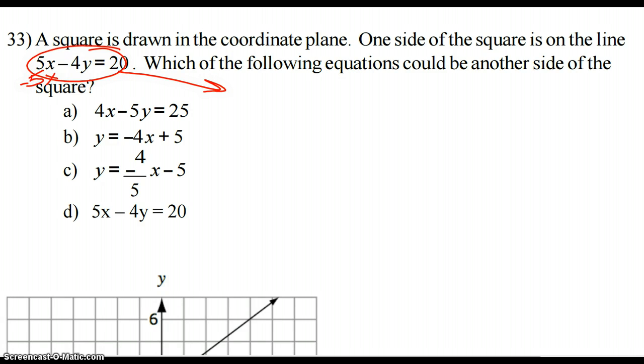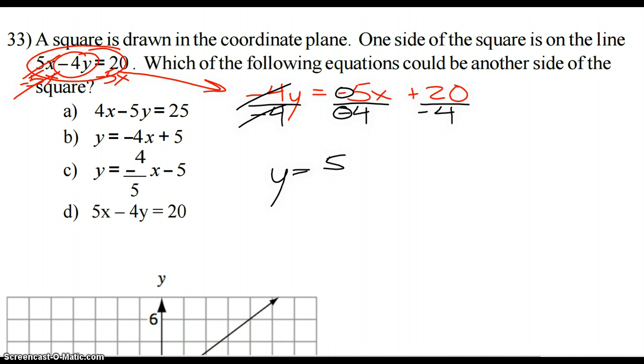So the first thing is I'd subtract 5x on both sides. We're going to get this into slope intercept form. All right, so we're left with negative 4y equals, and I'm going to put negative 5x plus 20. You could have put 20 minus 5x, but I like to put the slope first. And then we divide everything by negative 4. And we've got y equals, so we've got a negative over a negative, and I'm going to leave this as 5 fourths x. Negative over a negative is positive. And then 20 divided by negative 4 would be plus negative 5 or minus 5.